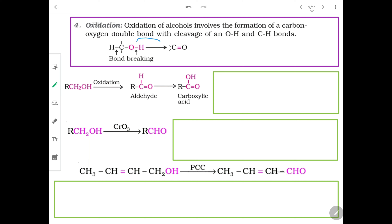Here is the O-H bond break and here is the C-H bond break. Oxidation of alcohol means removal of hydrogen — remember that — because removal of hydrogen is also oxidation. From here we remove H; the carbon attached to the functional group is called the alpha carbon. So from alpha carbon one hydrogen will go, and from hydroxyl one hydrogen will go. The remaining C-O will get a pi bond, forming a double bond.